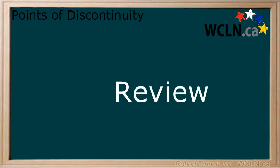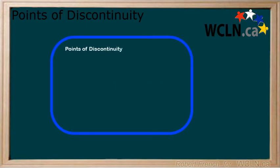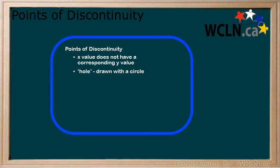In this lesson, you learned about functions and points of discontinuity. Points of discontinuity are x values with no corresponding y values, and are drawn by adding a circle at the x value in the function. You also learned that these are different than vertical asymptotes, and that both points of discontinuity and asymptotes are not part of the domain of a function.